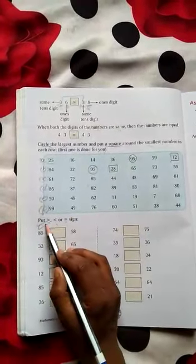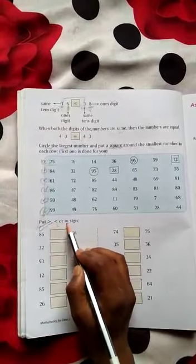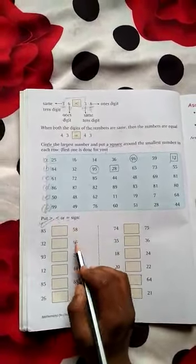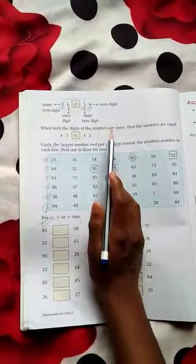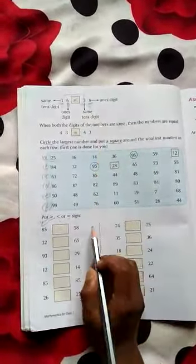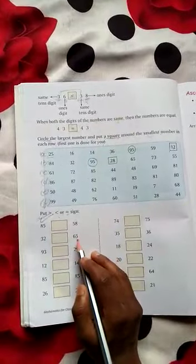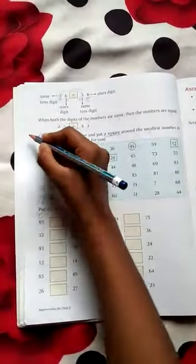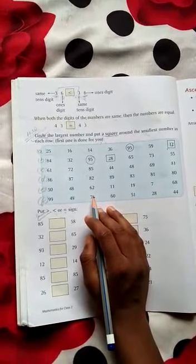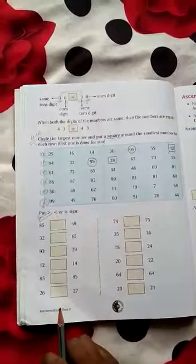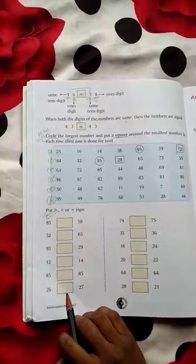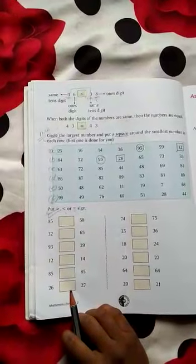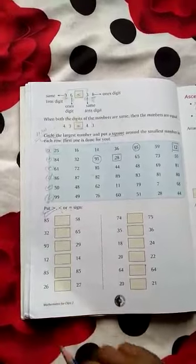Now put greater than, smaller than, or equal to sign. I have told you that this is greater than, smaller than, or equal to sign. I will leave this as homework. You need to look at your copy for help.